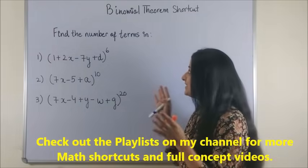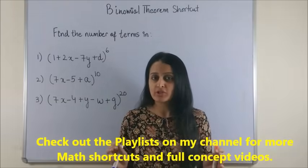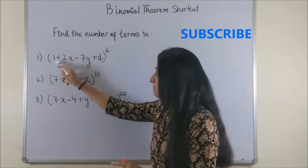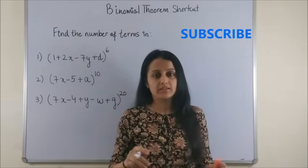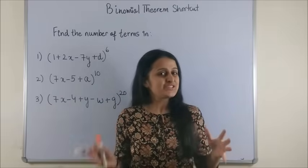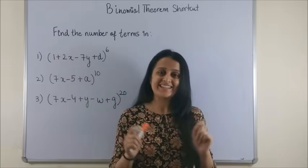It says find the number of terms in the given binomial expansion. It's huge and if you try expanding one by one by taking the pairs which is the conventional method, I am sure you'll go crazy. So let's check out how we can do that in five seconds. Let's get started.